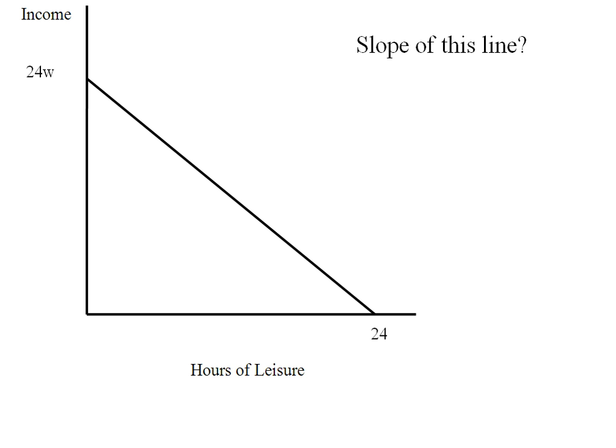Connecting those dots is my leisure labor tradeoff line or my income leisure tradeoff line. And what's its slope? Well, the line in general is going to have a slope of negative PX over PY, and PX in this case is the price of leisure, and PY is a dollar. But what is the price of an hour of leisure?